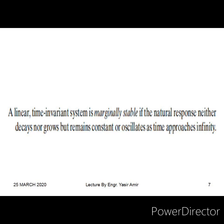In between stable and unstable, we have a marginally stable system. A marginally stable system has poles on the imaginary axis — real part is zero, only imaginary part such as plus j-omega or minus j-omega. Such systems have the property that for a bounded input, the output remains bounded, but the natural response does not decay to zero. However, when given an input whose frequency matches the imaginary pole frequency, their output becomes unbounded, just like an unstable system.